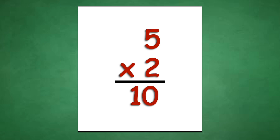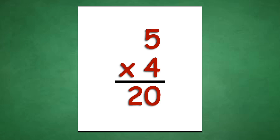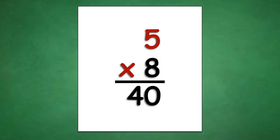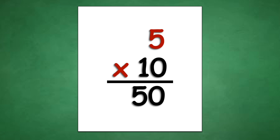Table of 5: 5 times 1 equals 5, 5 times 2 equals 10, 5 times 3 equals 15, 5 times 4 equals 20, 5 times 5 equals 25, 5 times 6 equals 30, 5 times 7 equals 35, 5 times 8 equals 40, 5 times 9 equals 45, 5 times 10 equals 50.